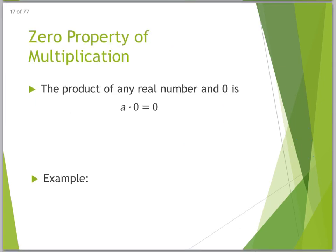The zero property of multiplication. The product of any real number and zero is zero. I know that weirds you out. I know that's new to you. Not really, I'm joking. So, if we have 5 times zero, you're going to get zero. That's it.